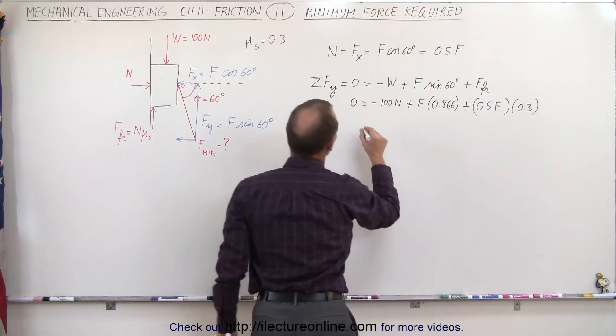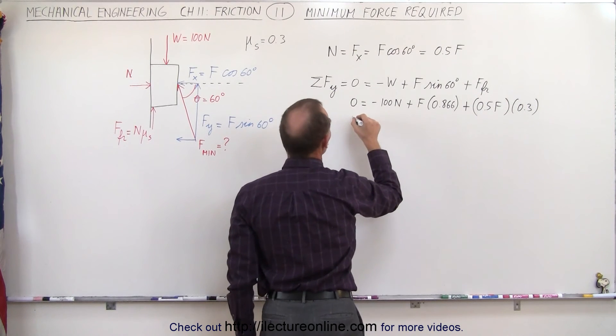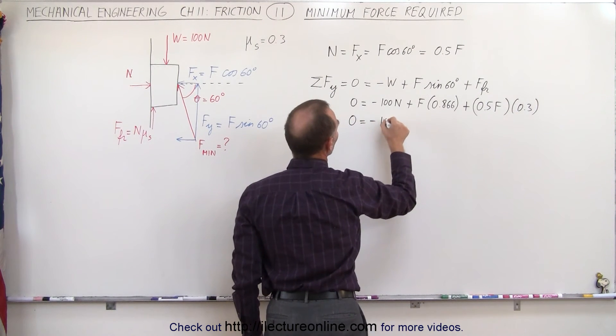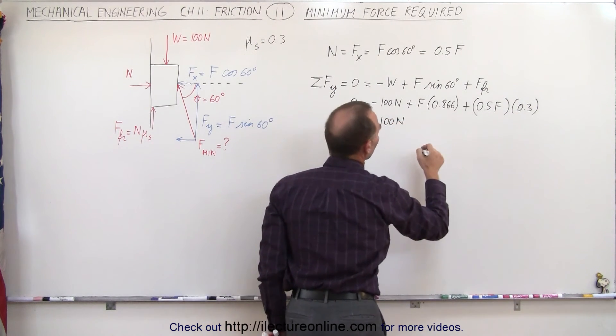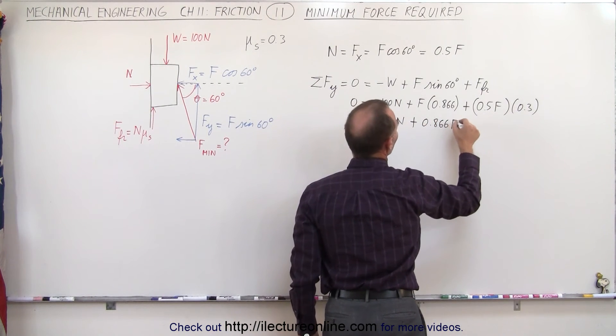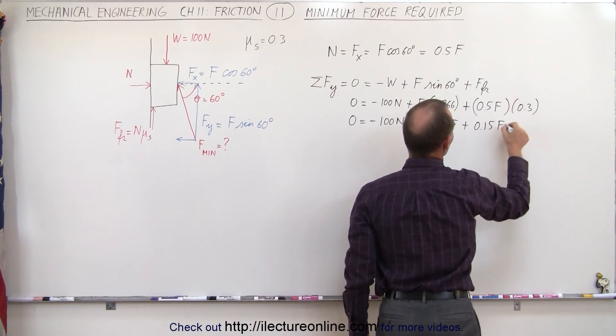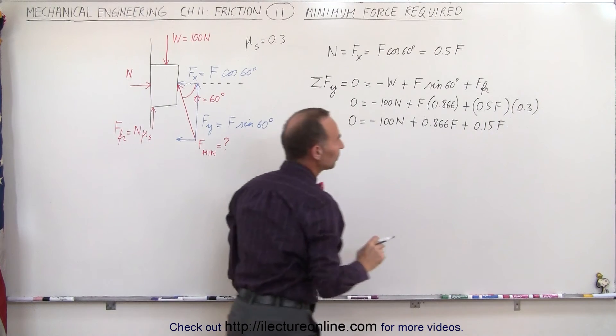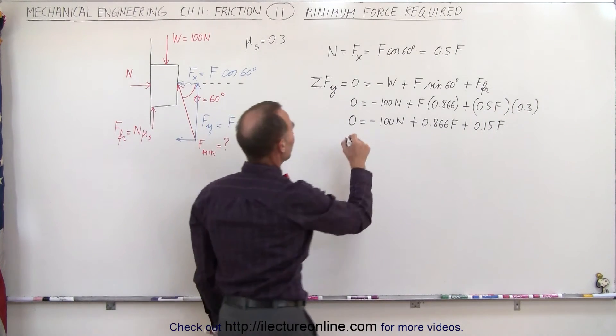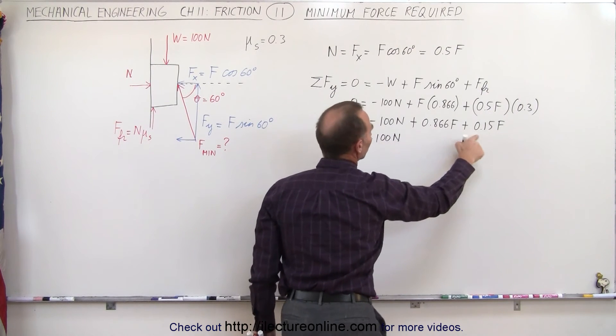Working this out, we have zero equals minus 100 newtons plus 0.866F, and then plus 0.5 times 0.3, which is 0.15F. Now we can combine those two to simplify the equation: zero equals minus 100 newtons plus 1.016F.